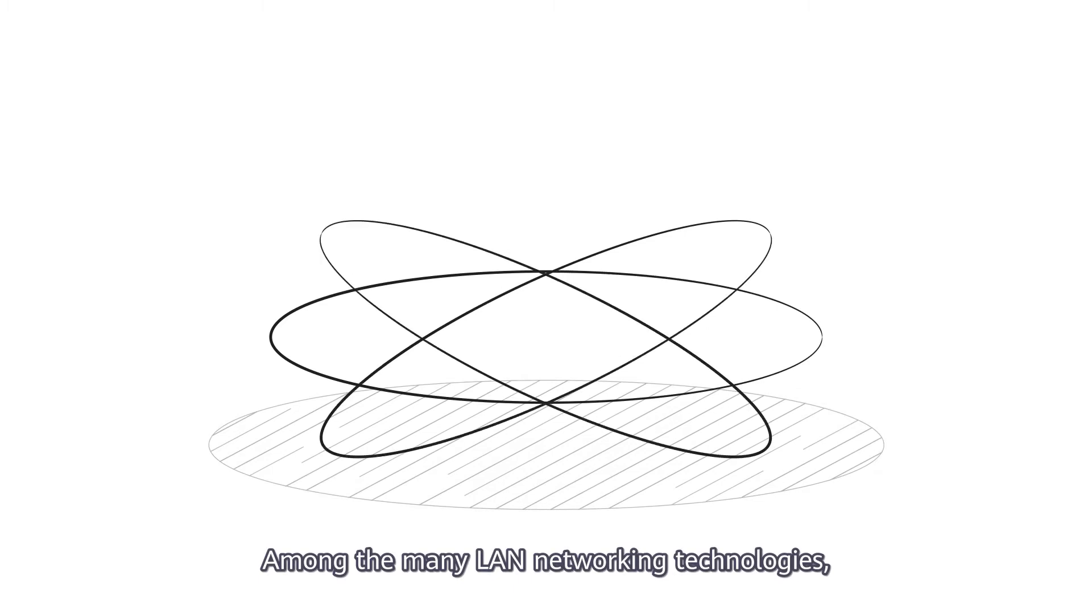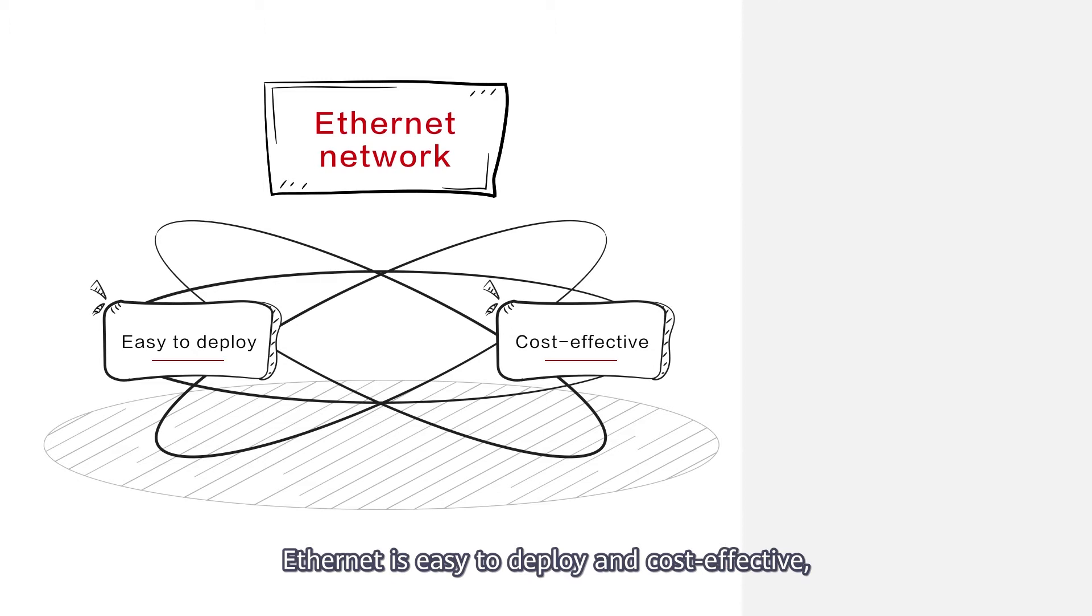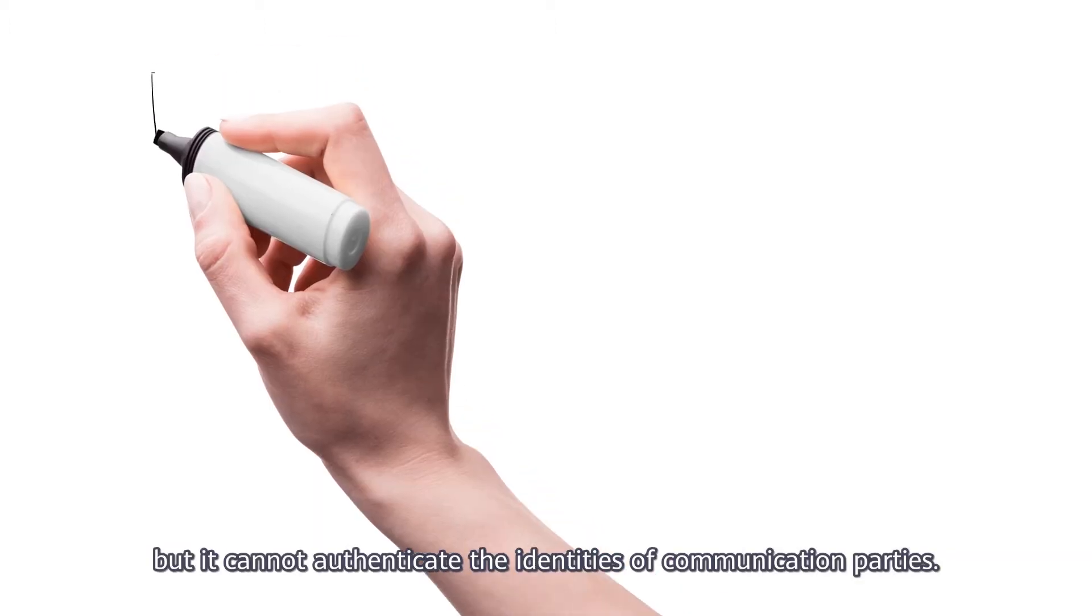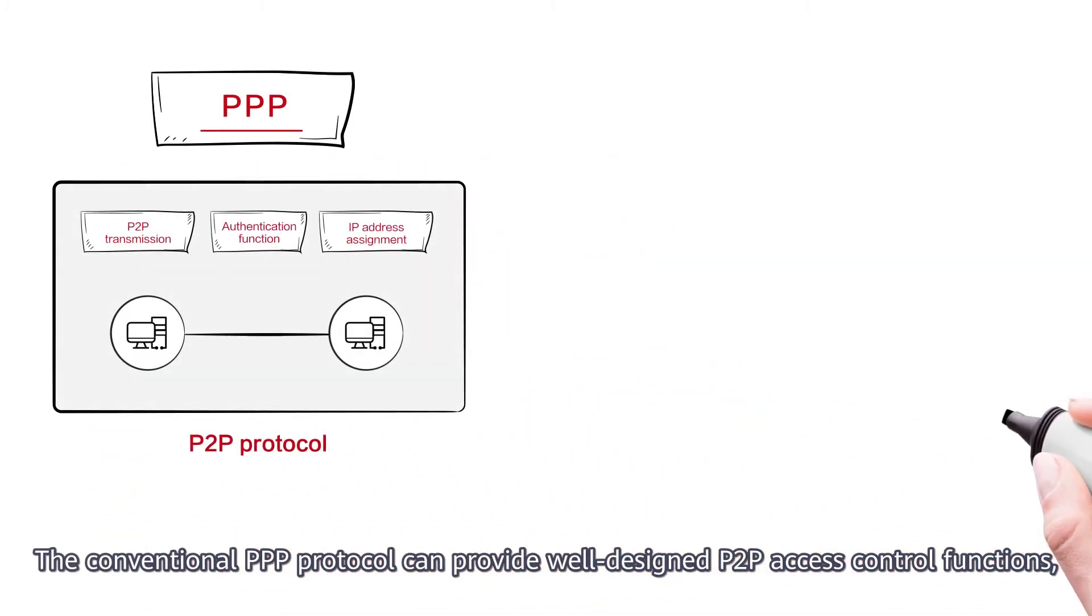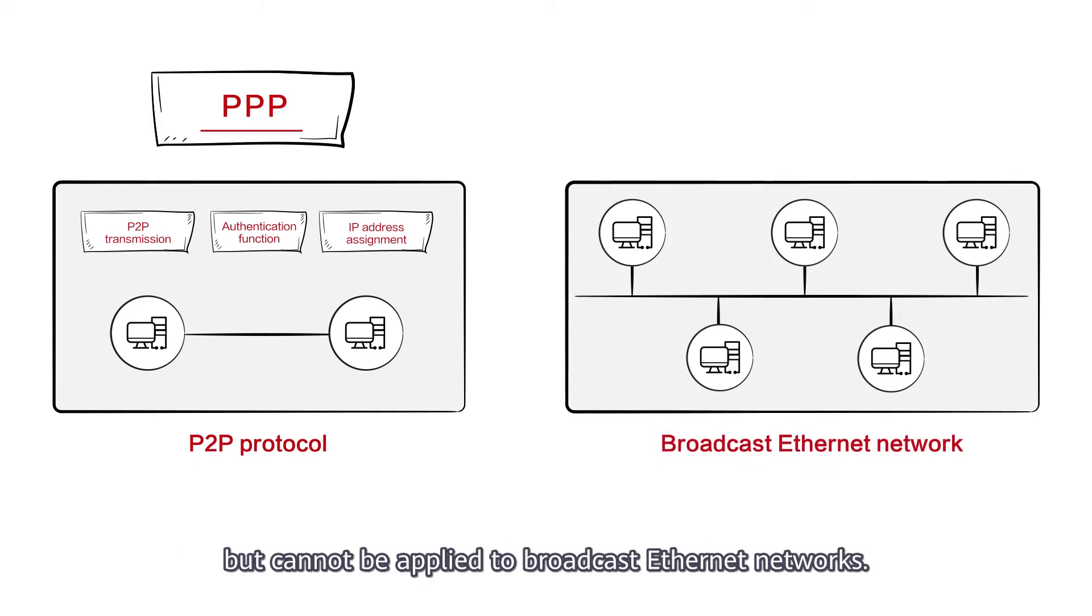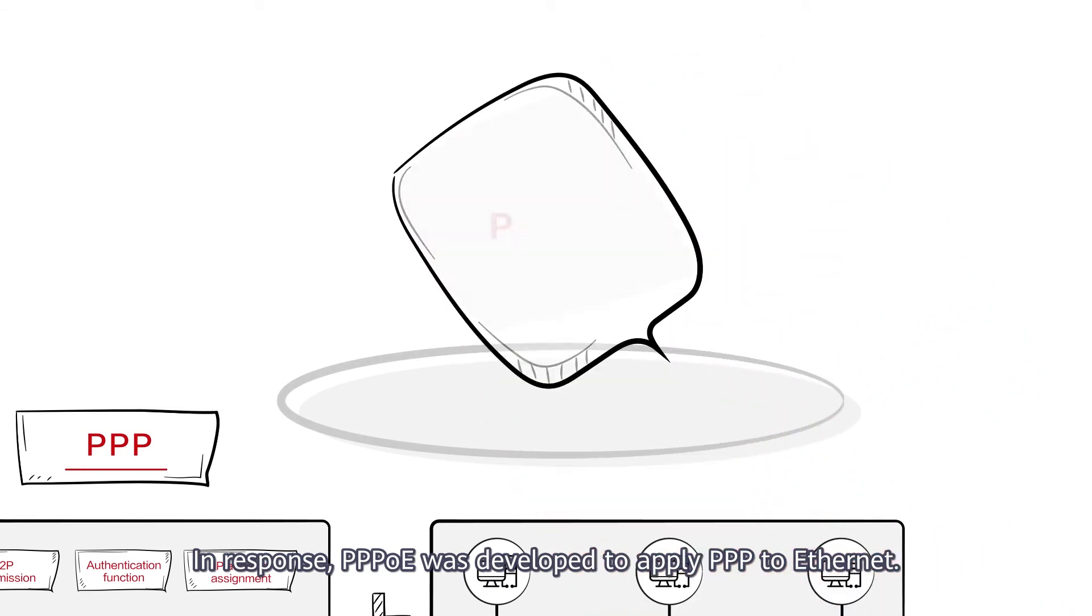Among the many LAN networking technologies, Ethernet is easy to deploy and cost-effective, but it cannot authenticate the identities of communication parties. The conventional PPP protocol can provide well-designed P2P access control functions, but cannot be applied to broadcast Ethernet networks. In response, PPPoE was developed to apply PPP to Ethernet.